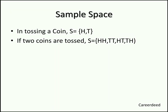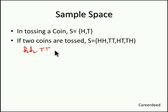Before solving problems we should understand the calculating procedure of sample space while tossing a coin. Sample space is the total number of choices available. In tossing a single coin the total number of sample space is 2 — we get a head or a tail. While tossing 2 coins the total number of sample space is 4: head-head, tail-tail, head-tail, and tail-head.